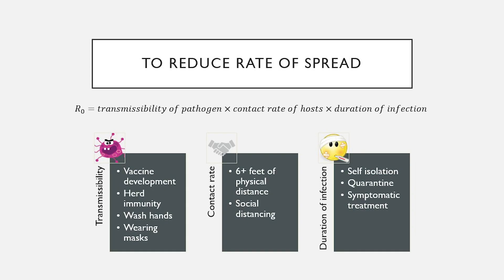We can see that the same quantities — transmission, contact, and duration — can serve as ways to reduce the rate of spread. We can do things to reduce transmission, like social distancing, hand washing, and wearing masks. Preventative action to limit infection, like vaccination, leads to what is called herd immunity — so many people have vaccine-induced immunity that a disease outbreak is less likely to be successful. Until we get a vaccine for a new disease, it will spread. We can't change the duration of infection, but we can self-isolate, quarantine, and provide symptomatic treatment. These actions show how we can change the basic reproduction number through our own interventions.